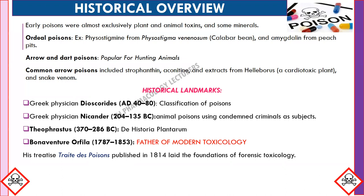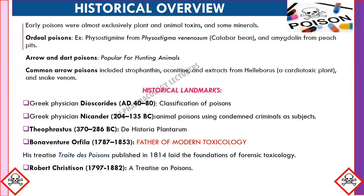Bonaventure Orfila was regarded as the father of modern toxicology. His treatise titled 'Traité des Poisons', published in 1814, laid the foundation of forensic toxicology. He advocated the practice of autopsy followed by chemical analysis in order to prove that poisoning had taken place. In 1829, one of his students, Robert Christison, published a treatise titled 'A Treatise on Poisons'. The first published work on clinical toxicology was by O. Costner, titled 'A Practical Treatise on Poison', published in 1848.